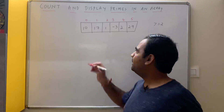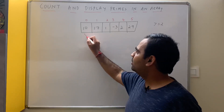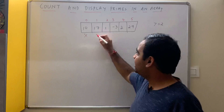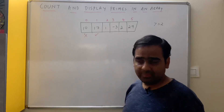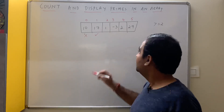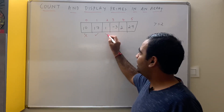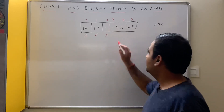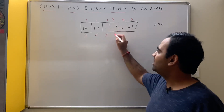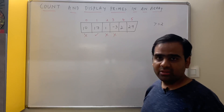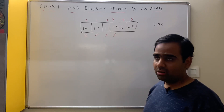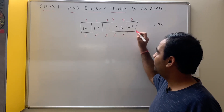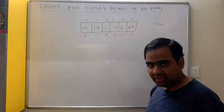Is 10 a prime number? No, 10 is not a prime number. Is 17 a prime number? Yes, 17 is a prime number. Is 1 a prime number? No, it is neither prime nor composite. Is minus 3 a prime number? No, it is neither prime nor composite. Is 2 a prime number? Yes. Is 29 a prime number? Yes.